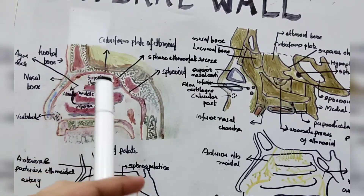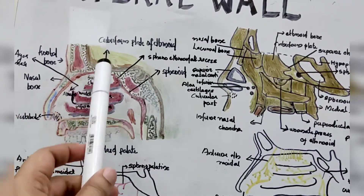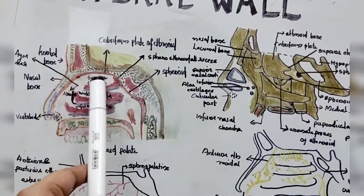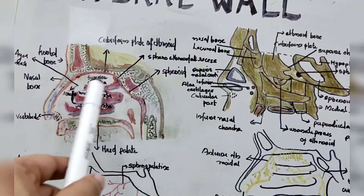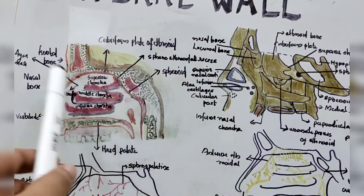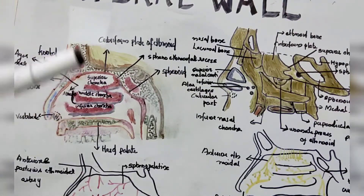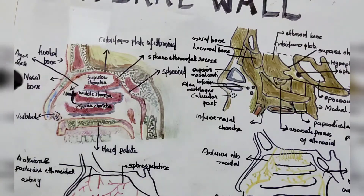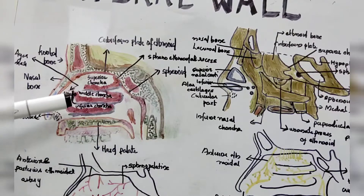The posterior part is characterized by bony projections called the conchae: the superior conchae, middle conchae, and also inferior conchae. They are shelf-like projections, and below them there are spaces called the meatus. Below the superior conchae is the superior meatus, below the middle conchae is the middle meatus, and below the inferior conchae is the inferior meatus.